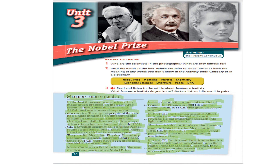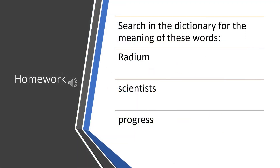We will now move to your homework. Your homework is to search in the dictionary for the meaning of these words: البحث في القاموس عن معاني هذه الكلمات. The first word is 'radium,' the second is 'scientist,' and the third is 'progress.' Please look for these words in the dictionary, write them in your notebook, and good luck.